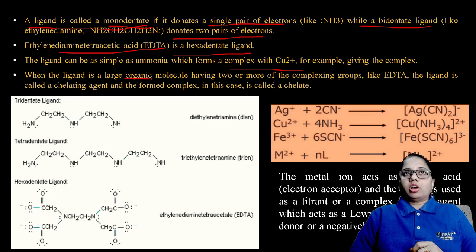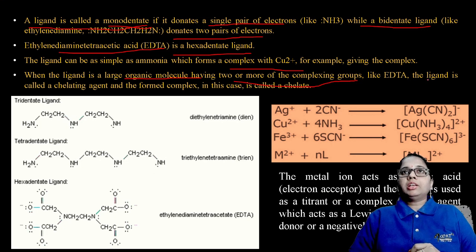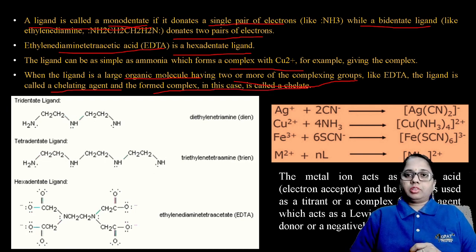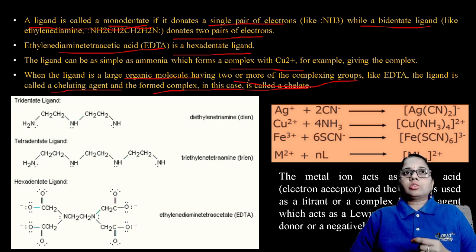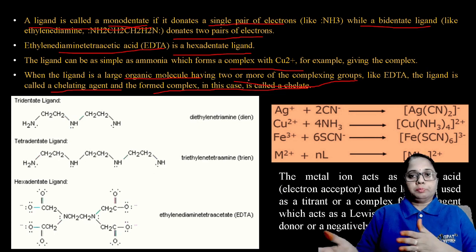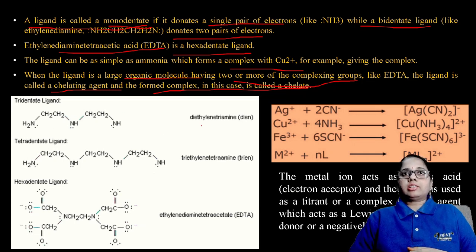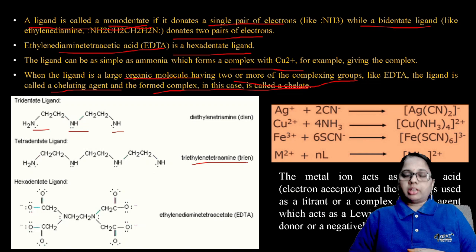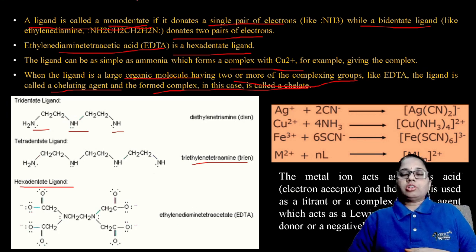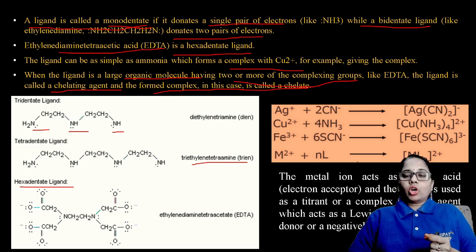When the ligand is a large organic molecule having two or more complexing groups like EDTA, the ligand is called a chelating agent and the formed complex is called a chelate. A tridentate ligand — diethylenetriamine — donates three pairs; a tetradentate ligand — triethylenetetramine — donates four. Similarly, the hexadentate ligand is EDTA itself, donating all six pairs of electrons.